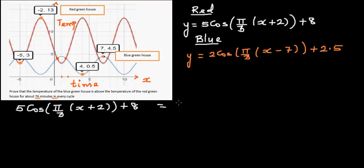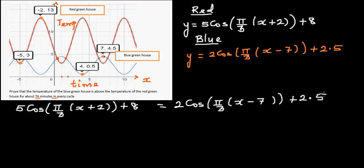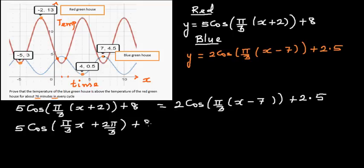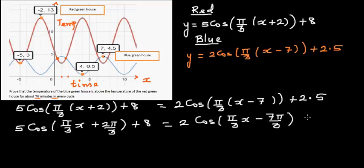So, equating the two equations: 5cos(π/3·x + 2π/3) + 8 = 2cos(π/3·x − 7π/3) + 2.5. Expanding the brackets: the left side becomes 5cos(π/3·x + 2π/3) + 8, and the right side becomes 2cos(π/3·x − 7π/3) + 2.5.